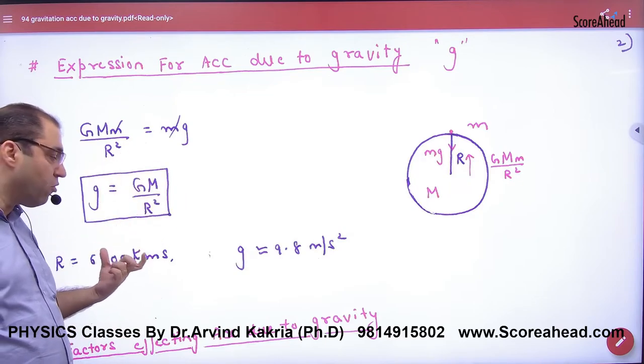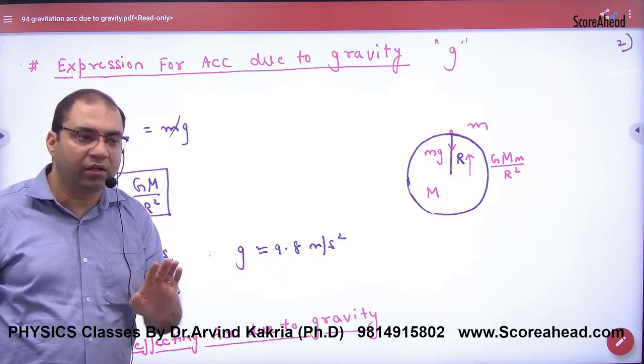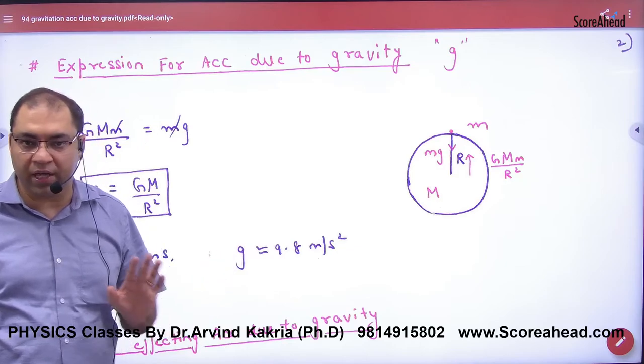radius of earth, which is 6400 kilometers, put it. So the approximate value solved will be 9.8 meters per second square. But it is not important.